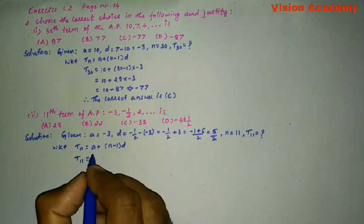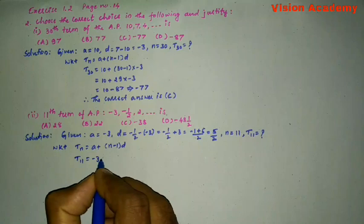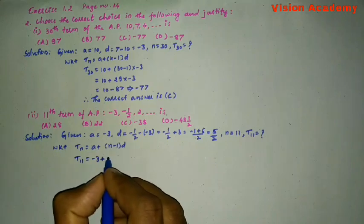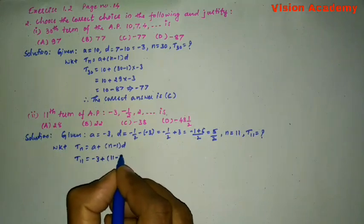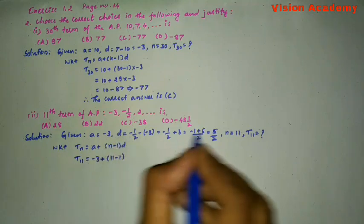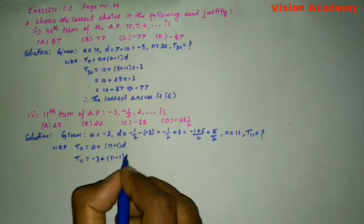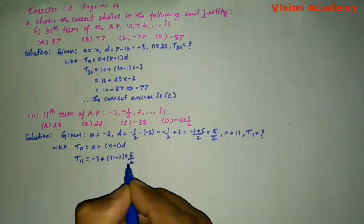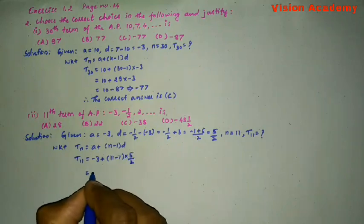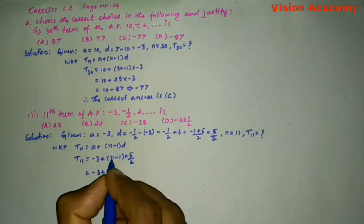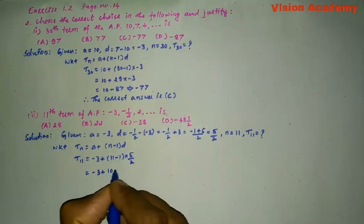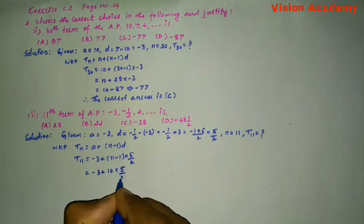Let us write T11 is equal to A is minus 3 plus N is 11 minus 1, the common difference D is 5 by 2. So let us simplify minus 3 plus 11 minus 1 is 10 into 5 by 2.